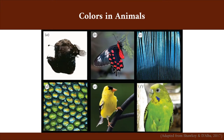Colors in animals can be produced by pigments, like we see in this anglerfish and in this butterfly. They can be produced by structures that reflect light in a certain way, like we see in these feathers, or they can be produced by a combination of both, like we see in these bottom examples.